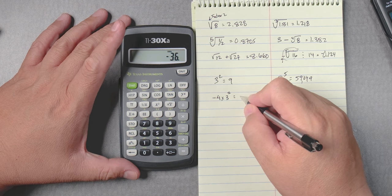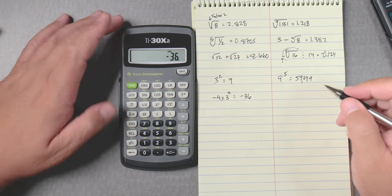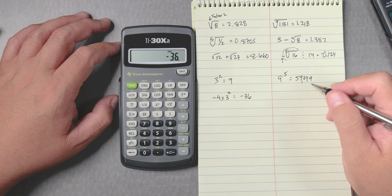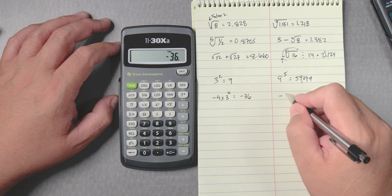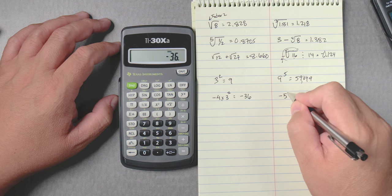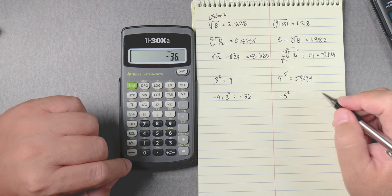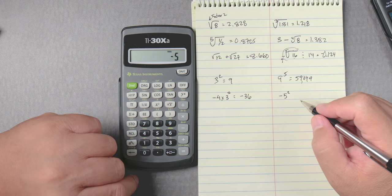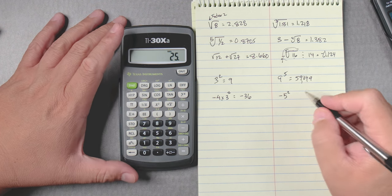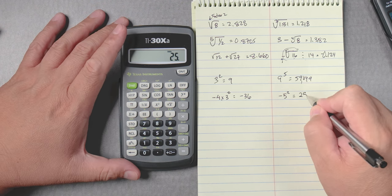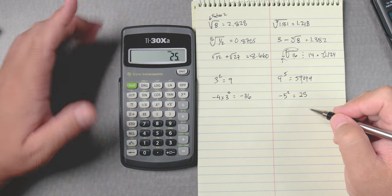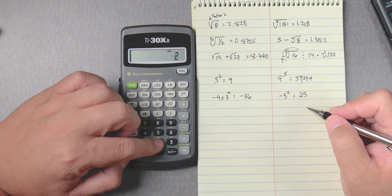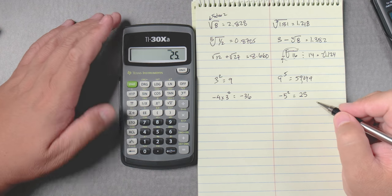When we have something like negative 5 squared, we press in 5 and put negative and then we square it, it's going to give you 25. And if you go 5 negative y to the x and put a 2 which is squaring, you still get 25.